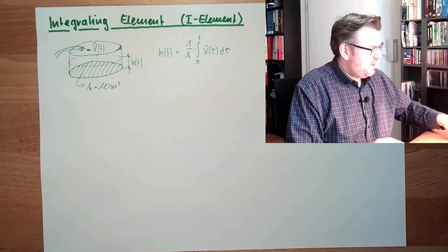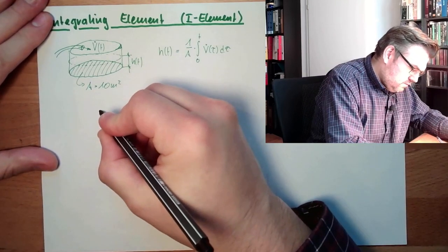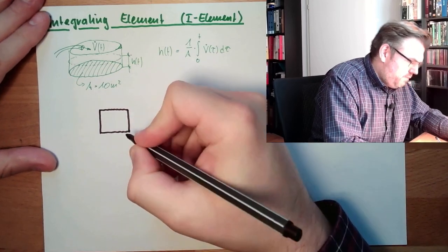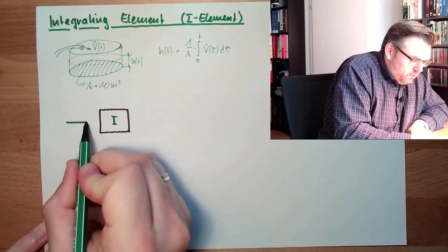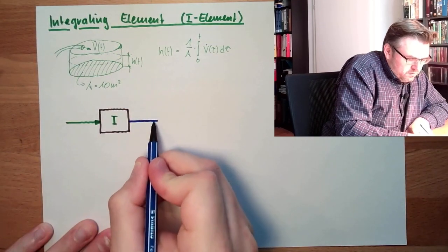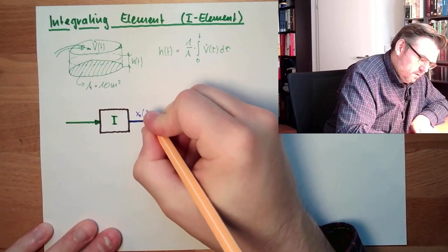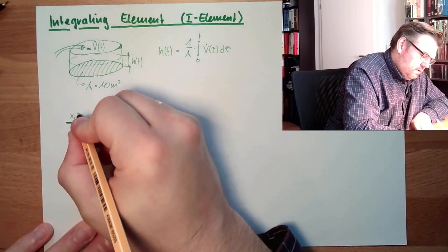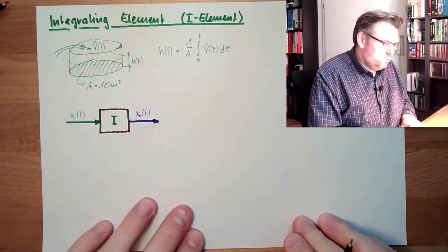So let's have a look at this as a transfer function. There is our element — this is an I-element. The I-element has a certain input and an output, the resulting output. So that's XO from T, and this here is XI from T.